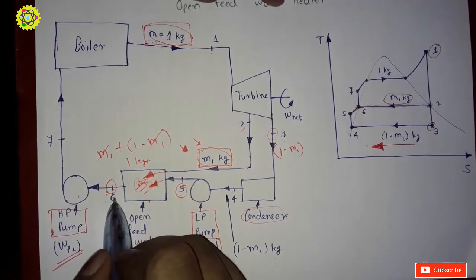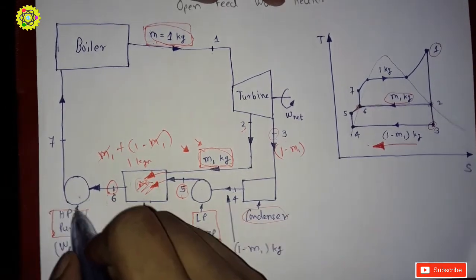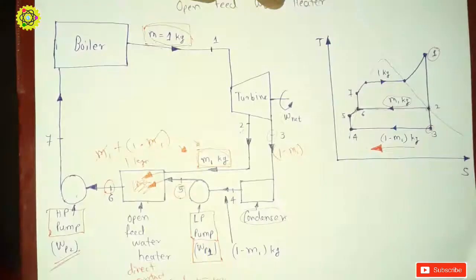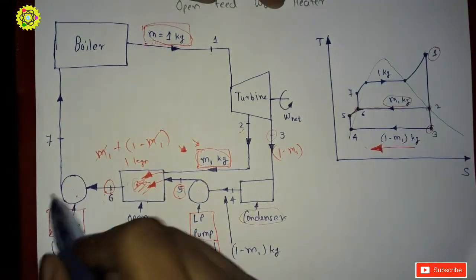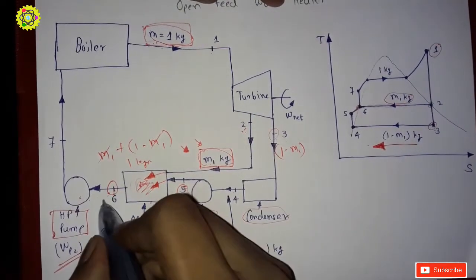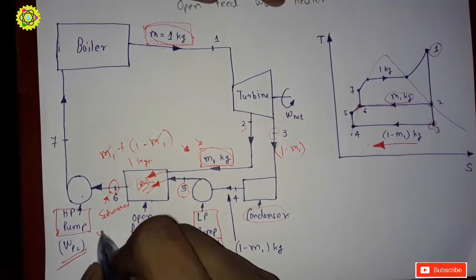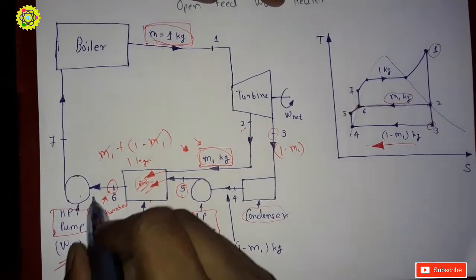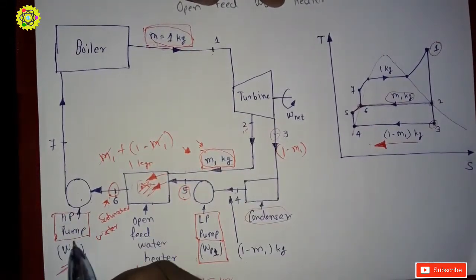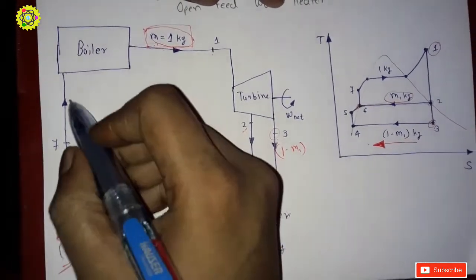This 1 kg mass of liquid — or saturated water — is pumped by the HP pump up to the boiler pressure, arriving at State 7. So the HP pump raises the saturated water from State 6 to State 7 at boiler pressure.